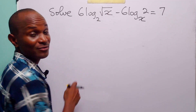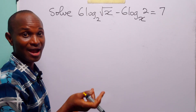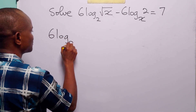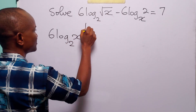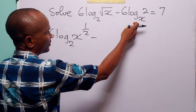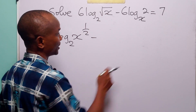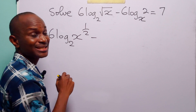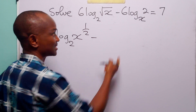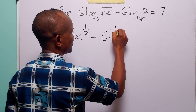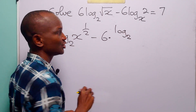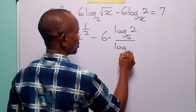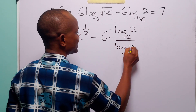You know that the square root of x can be written as x to the power half. So this term can be written as 6 times log to base 2 of x to the power half. Now we are going to change the base of this logarithm from base x to base 2 to match this term. Applying the change of base formula, this term becomes 6 times log to base 2 of 2 divided by log to base 2 of x.